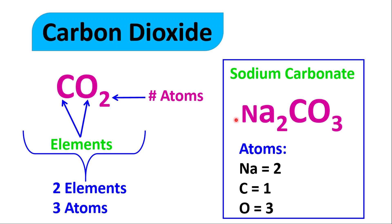Let's look at sodium carbonate. How many elements are in sodium carbonate? You see four letters, but important to note that the A is lowercase — so Na together is one element. C is another element, and O is another element. In total we have three elements in sodium carbonate. But how many atoms? We have two atoms of sodium, one atom of carbon, and three atoms of oxygen. So together we have six atoms, but only three elements.